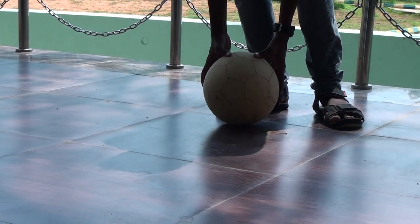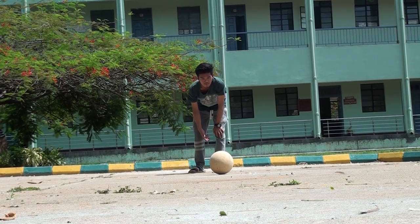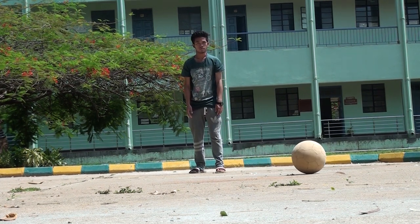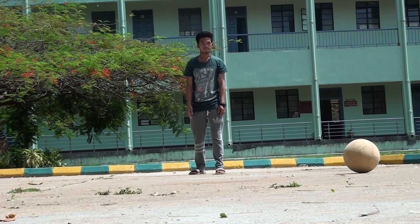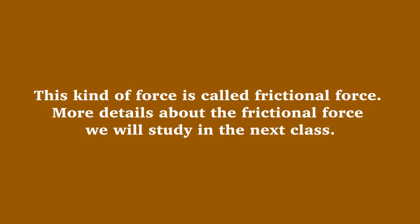So we can say that for stopping an object, we need to apply an external force. Now observe carefully — here the ball is moving and it comes to rest without applying any visible external force. Then why does it come to the rest position? The ball itself comes to rest due to a force called frictional force. More details about frictional force we will study in the next class.